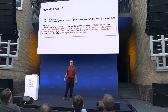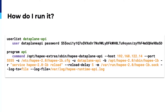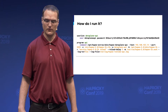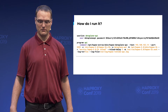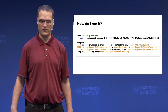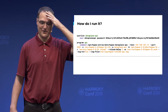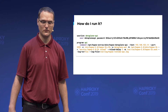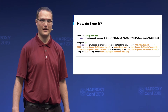To run the Data Plane API, the easiest way is to use the new 'program' directive in HAProxy 2, which lets you start up utilities from the master process of HAProxy. The arguments are relatively straightforward — mostly straight from the documentation: the host, the port, the configuration file, the socket to talk to, the binary, how to reload it, and the username and password which the API will use to authenticate.